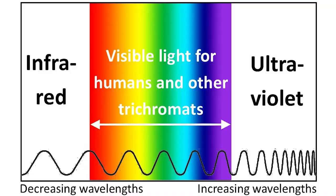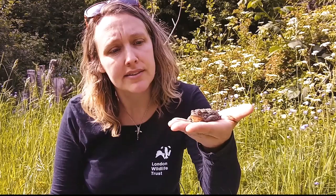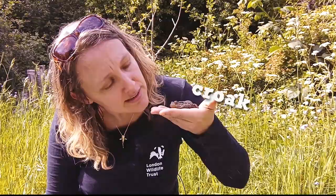Many amphibians, like this toad, birds, reptiles, fish and some insects are tetrachromatics, meaning they have four cone cells. Some can see infrared and some can see ultraviolet.